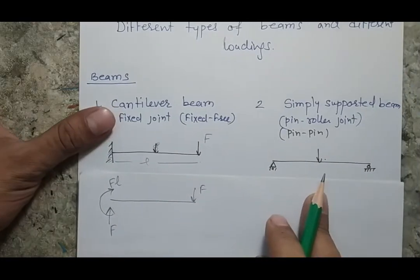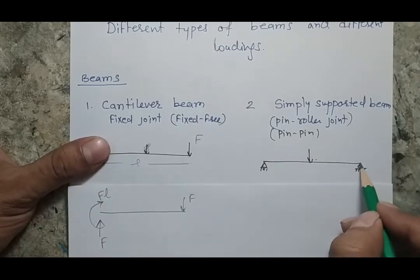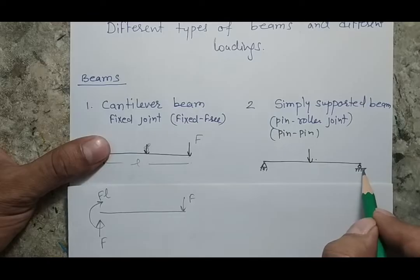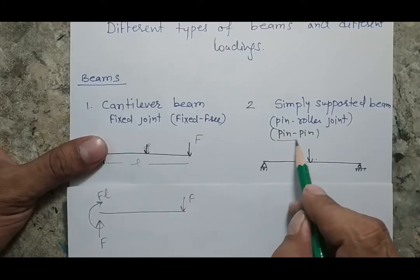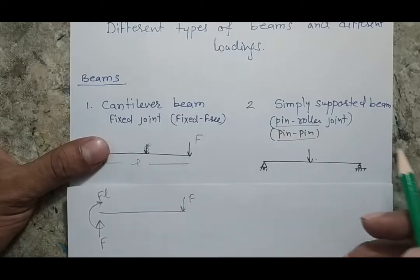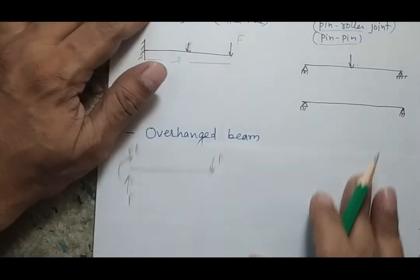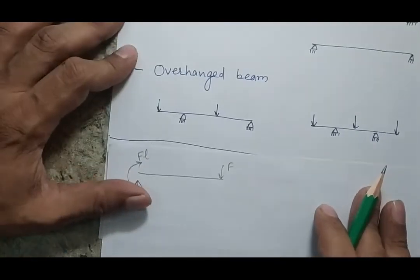The second type of beam is a simply supported beam, which is supported at two ends. One end is normally a pin joint and the other end is a roller joint. Sometimes we also have a pin-pin type of beam, otherwise it is a pin and roller type.